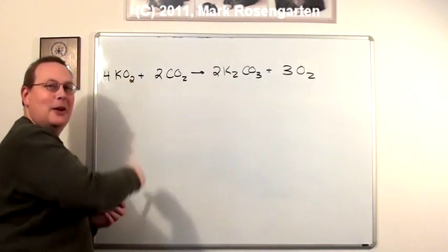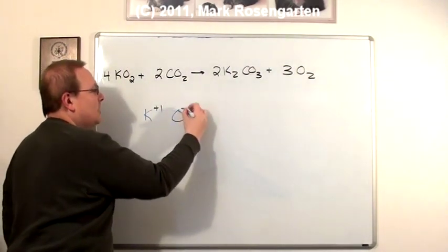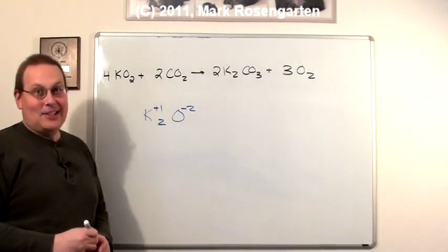You see this formula right here? Now, normally, potassium is plus one ion and oxide is minus two, so the formula would be K2O. That's potassium oxide.